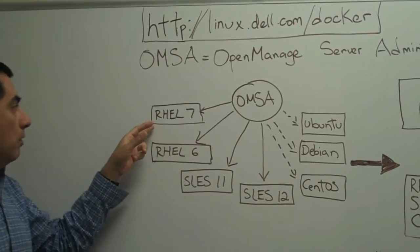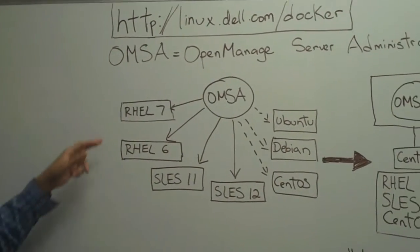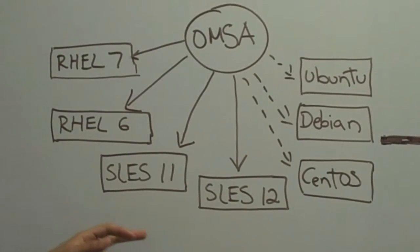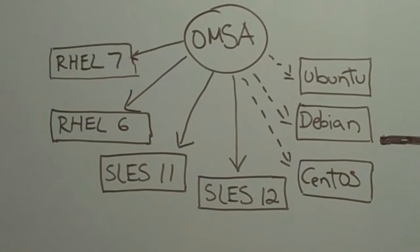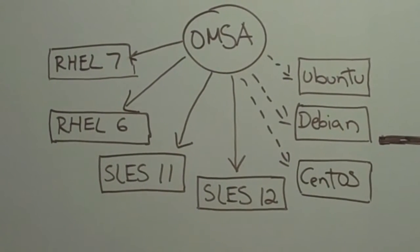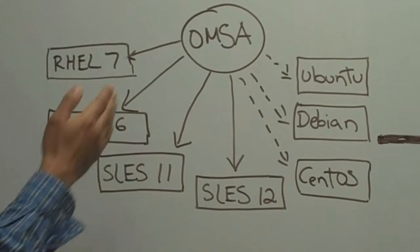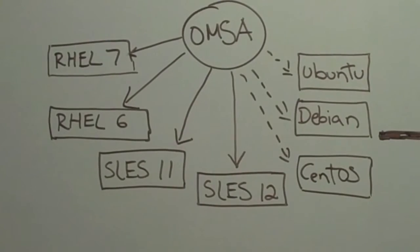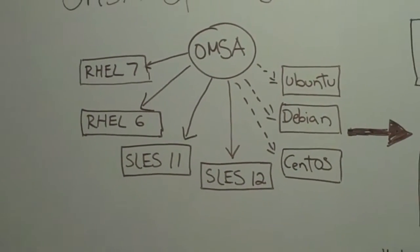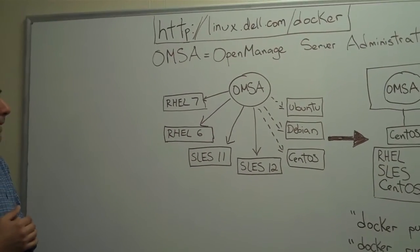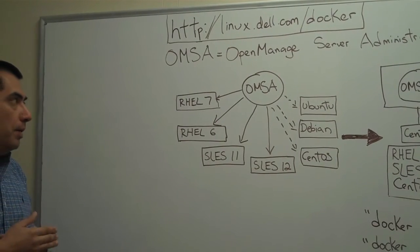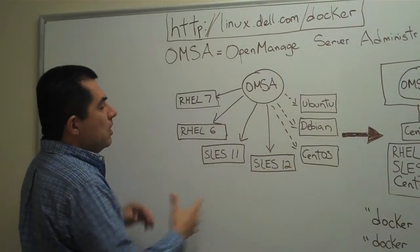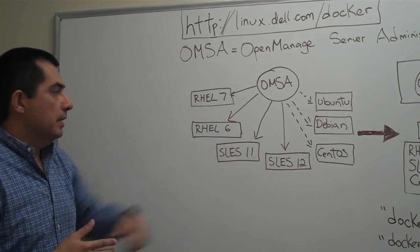We have OpenManage for several Linux distributions — we have it for RHEL 7, for RHEL 6, we have another version for SLES 11, for SLES 12. In addition to that, we also have customers who run other distributions such as Ubuntu, Debian, and CentOS that also ask for OMSA. We don't support those distributions. We have some versions of OpenManage that we have compiled, but it's unsupported. So as you can see, it's kind of a mess with a lot of distributions here in the mix.